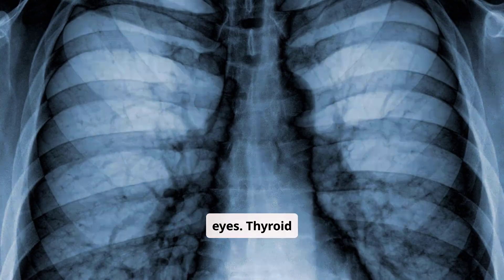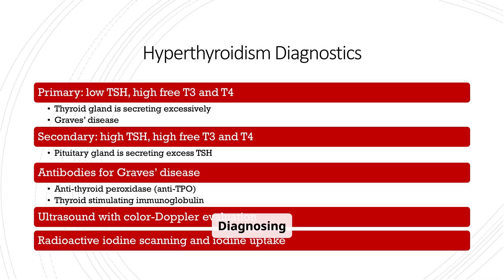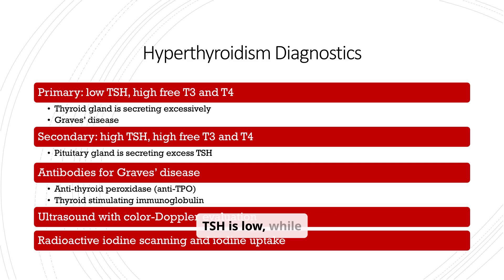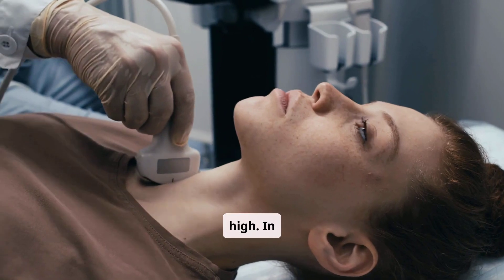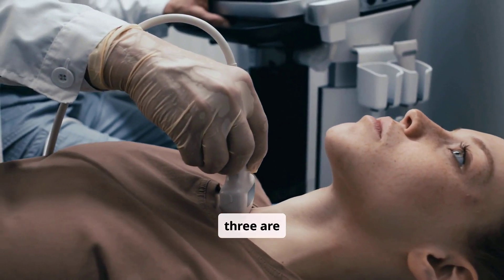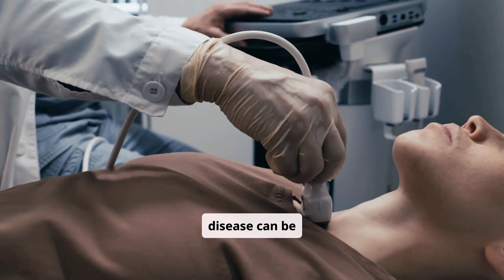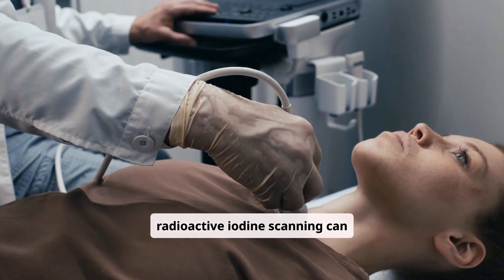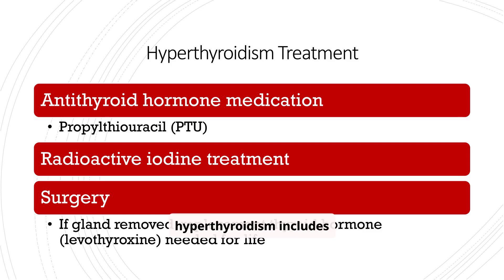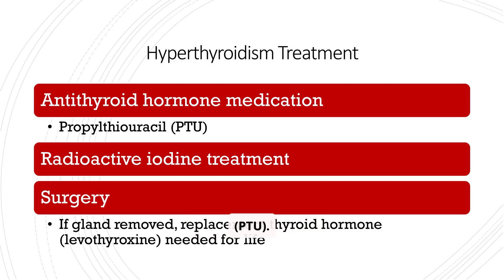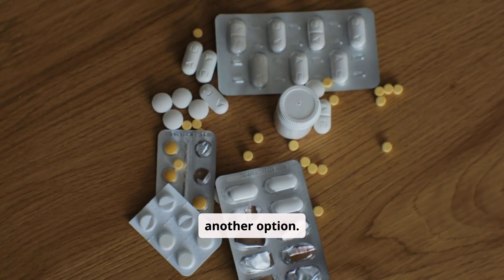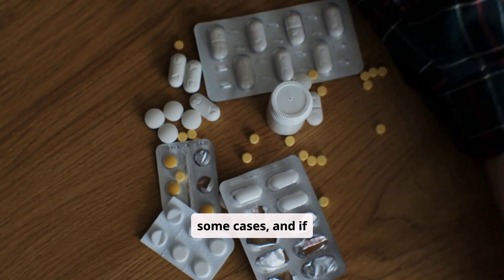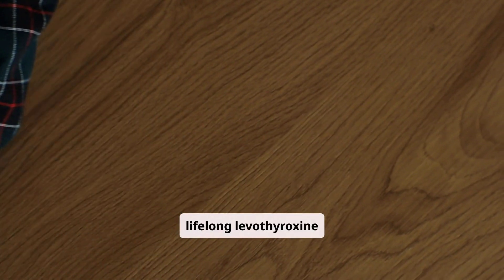Thyroid dermopathy or pretibial myxedema can also occur with hyperthyroidism. Diagnosis involves assessing TSH and free T3 and T4 levels: in primary hyperthyroidism, TSH is low while T3 and T4 are high; in secondary hyperthyroidism, all three are high. Antibodies for Graves' disease can be detected, and ultrasound and radioactive iodine scanning can also be helpful. Treatment includes antithyroid hormone medication such as propylthiouracil (PTU), radioactive iodine treatment, or surgery. If the gland is removed, lifelong levothyroxine replacement is needed.